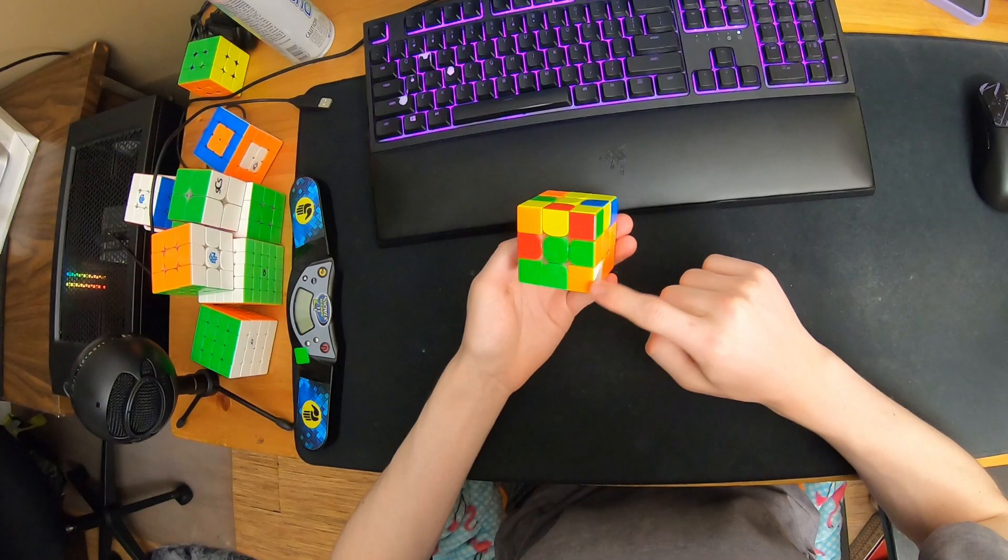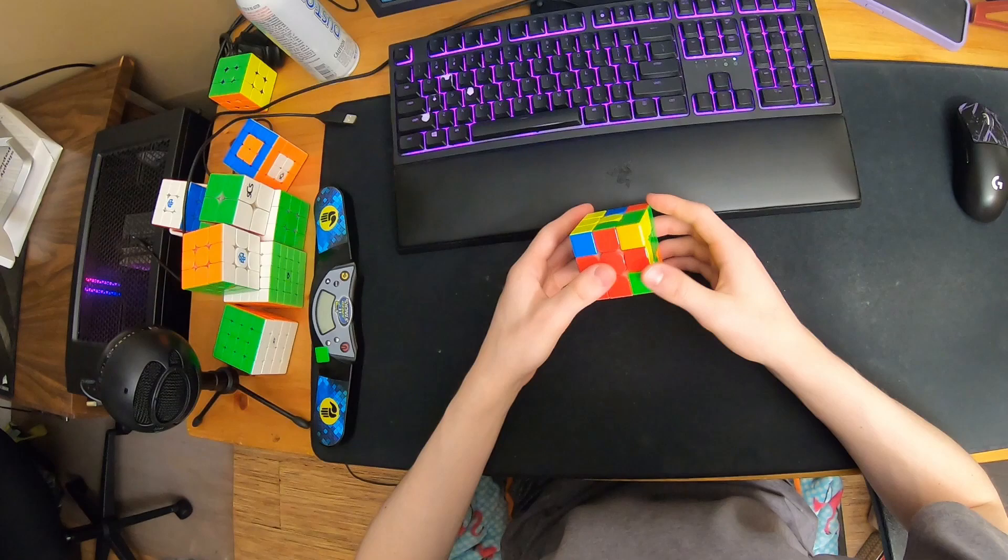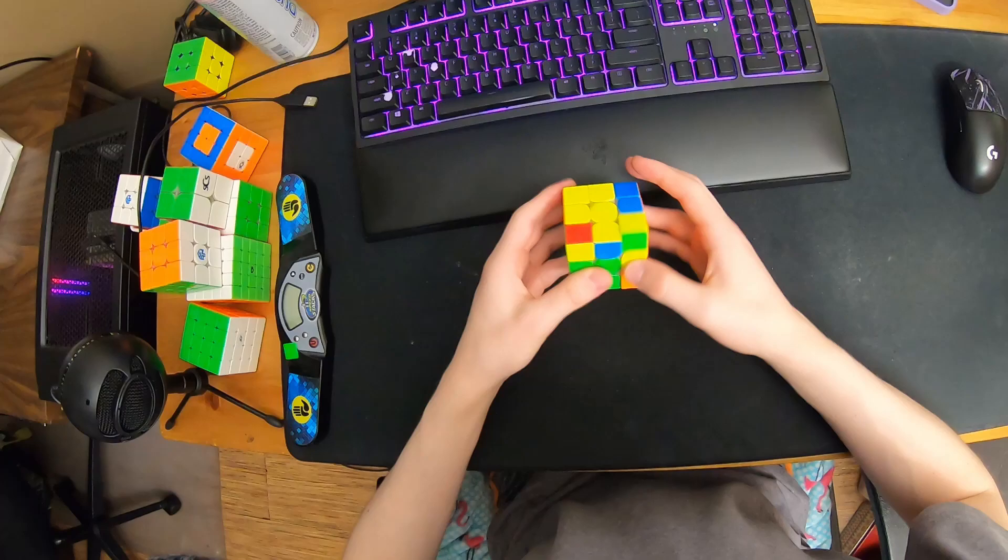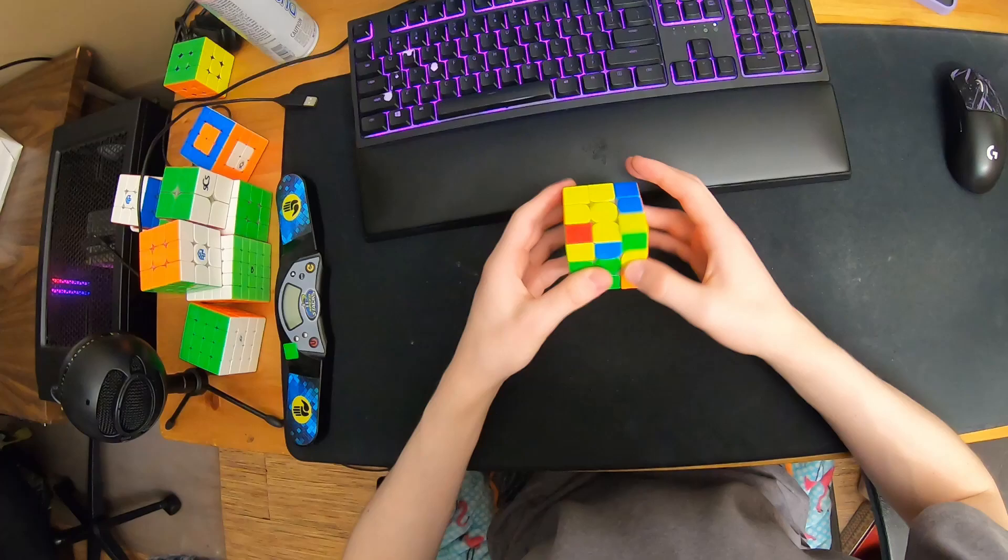Instead I do a U first and then you double sexy. Then I have this much better case and I do a sledgehammer for edges and it gives me a Sune. Then I see this J-perm which I do like that.